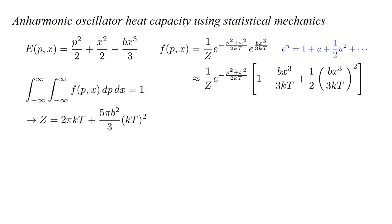The value of the partition function z is that which makes the probability summed, or integrated, over all p and x values, equal to one. We find z equals two pi kt, plus five pi b squared over three, times quantity kt squared.